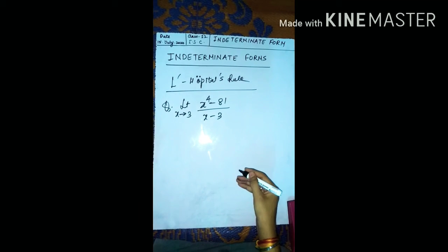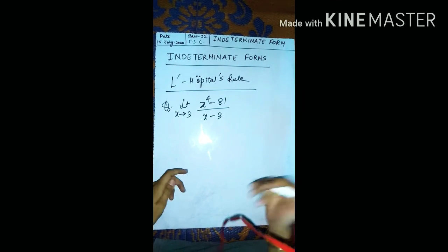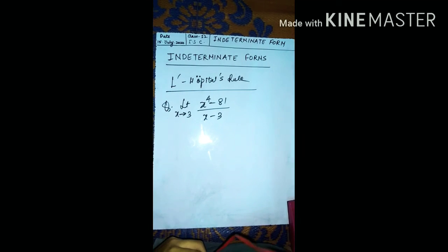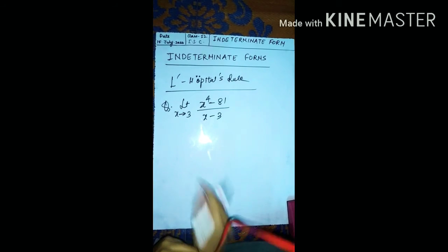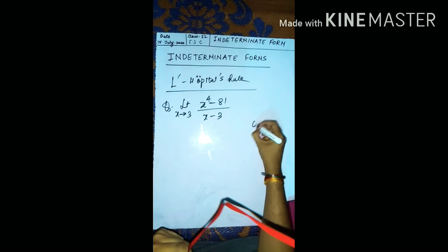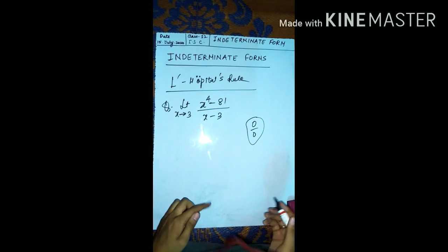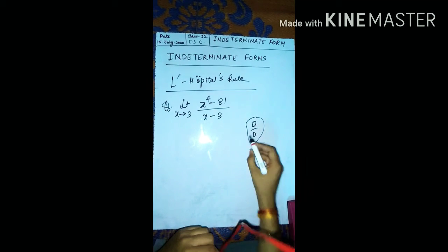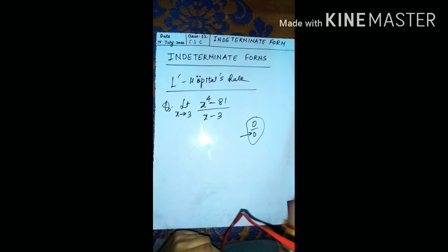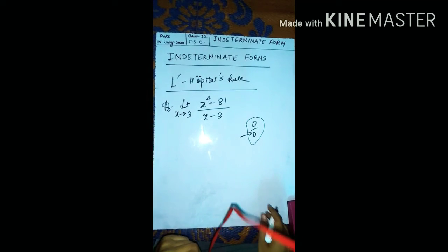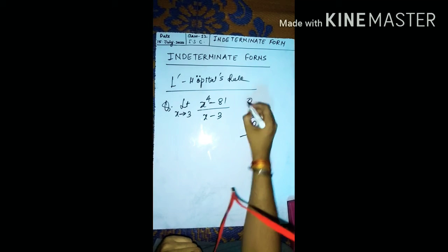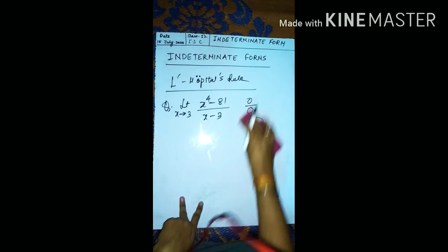Let me explain the algorithm for solving such questions. Your first step is always to put x equal to 3 in the limit and check whether you are getting 0 by 0 form or not. Our first criteria is to check whether it is an indeterminate form. As we put x equal to 3: 3 to the power 4 is 81, so 81 minus 81 is 0 upon 3 minus 3, which is 0. Yes, this is indeterminate form.